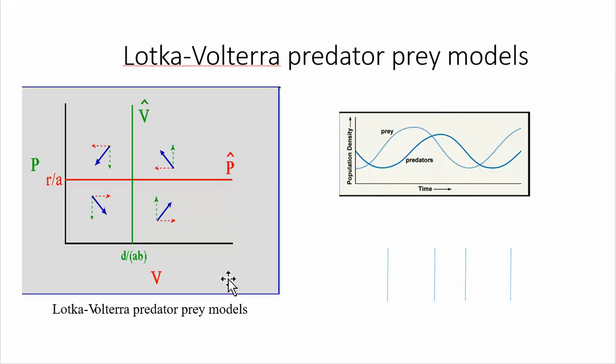On the other axis, on the y-axis, we have the density of the predators. And they're symbolized in green. And so their abundance changes up and down in this graph. But we can identify a threshold level of predator density, which is this red line signified by P-hat.